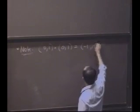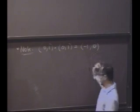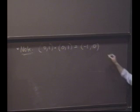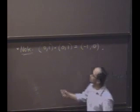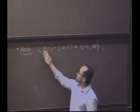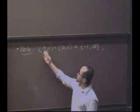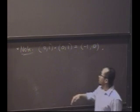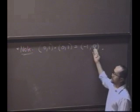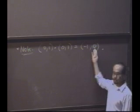Which is minus 1, 0. So something very special happened here. The thing that's this element, which is 0 in the first coordinate, produced something which is 0 in the second coordinate.